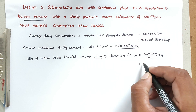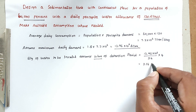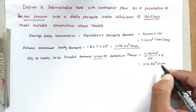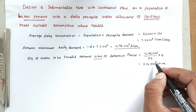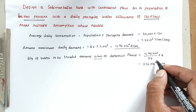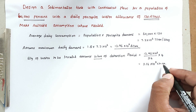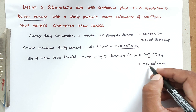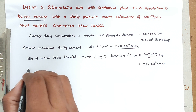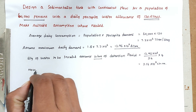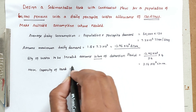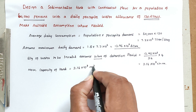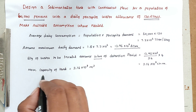This gives us 2.16×10⁶ liters. Converting to cubic meters by multiplying by 10⁻³, we get 2.16×10³ cubic meters. So the required capacity of the tank is 2.16×10³ m³.